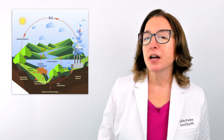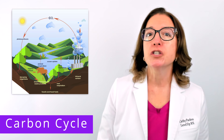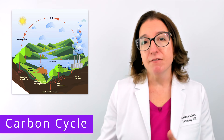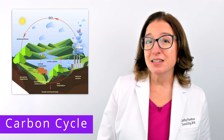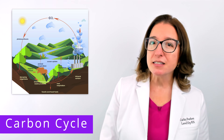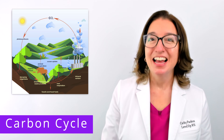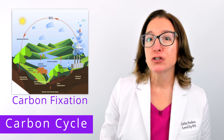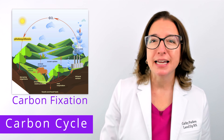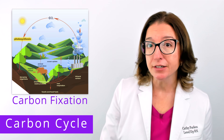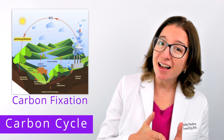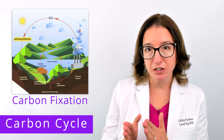Let's first talk about the carbon cycle, which is the recycling of carbon between organisms and the environment. Two key processes that take place during the carbon cycle include carbon fixation and decomposition. Carbon fixation occurs during photosynthesis, when photoautotrophs, such as plants, algae, and cyanobacteria, use energy from sunlight to convert carbon dioxide into organic molecules.